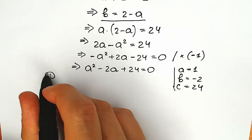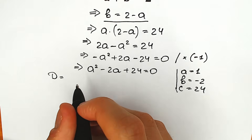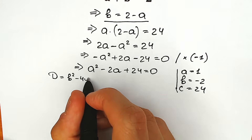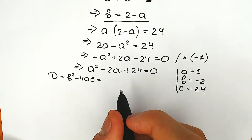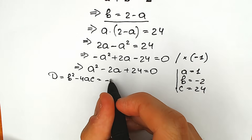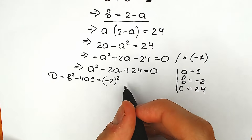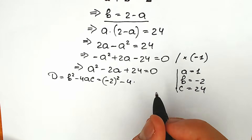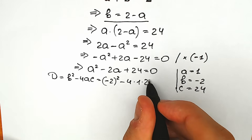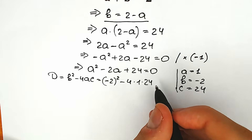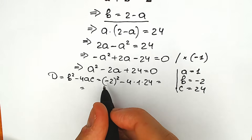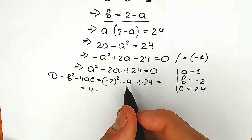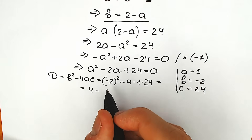First of all let's find our discriminant. The discriminant equals b squared minus 4ac. So we have (minus 2) squared minus 4 times 1 times 24. That gives us 4 minus 96, so our discriminant is negative.